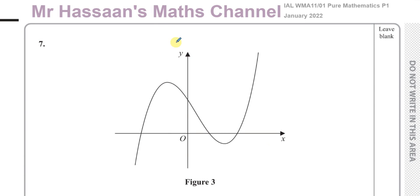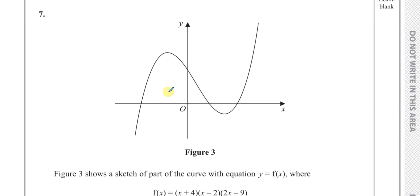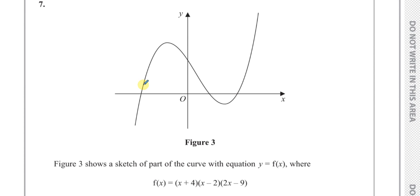Welcome back, this is Mr. Hassan's Maths Channel and this is question number 7 from the January 2022 International A-Level Edexcel Pure Mathematics P1 paper. This question is about a graph of a function defined as (x+4)(x-2)(2x+9).